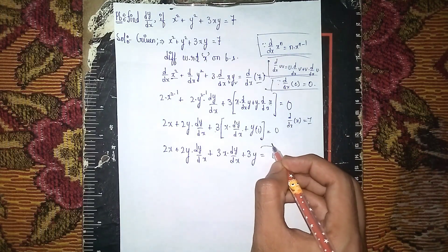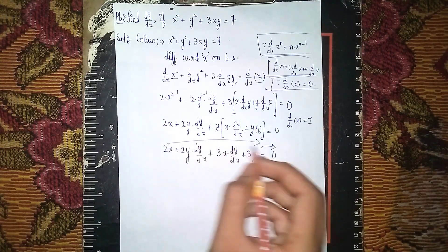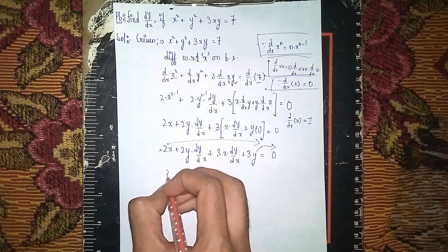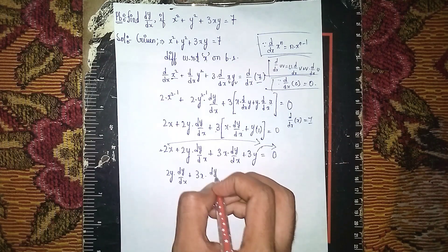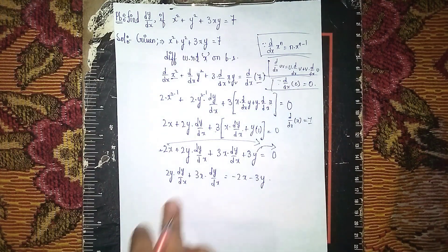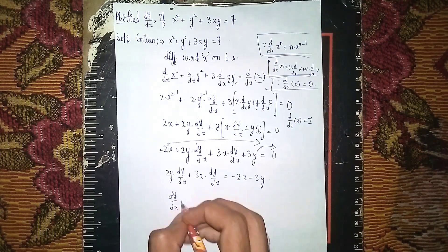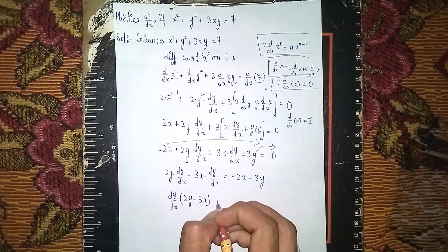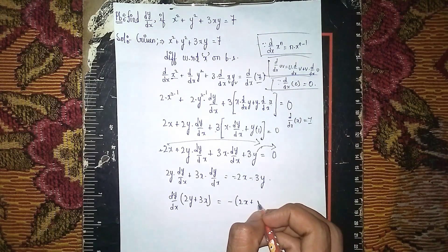Now send 2x and 3y to the other side. What remains: 2y · dy/dx + 3x · dy/dx = −2x − 3y. Take dy/dx common: dy/dx · (2y + 3x) = −(2x + 3y).